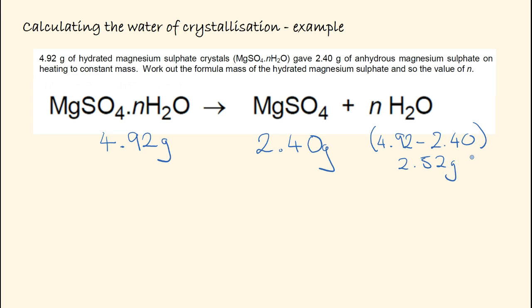We then go through our steps. First, work out the moles by dividing by the MR of each substance: 2.40 grams divided by 120 grams per mole for MgSO4, and 2.52 divided by 18 for water. This gives us our number of moles.